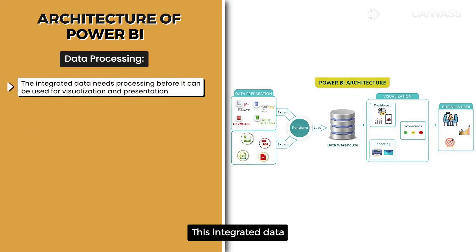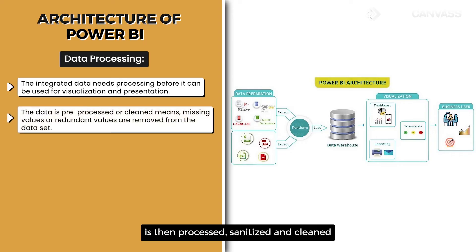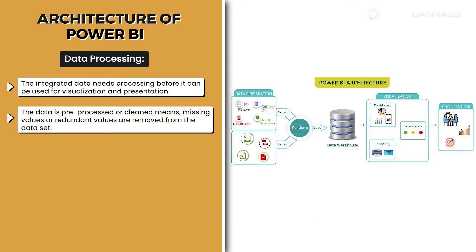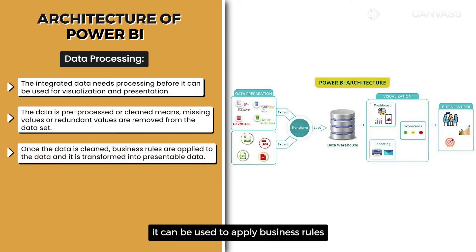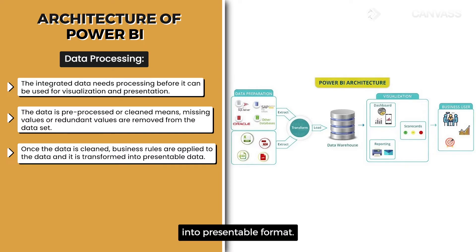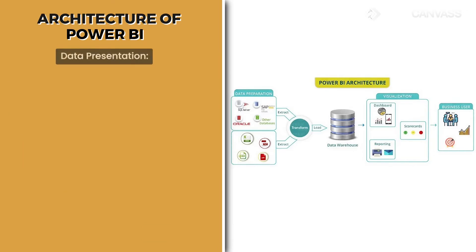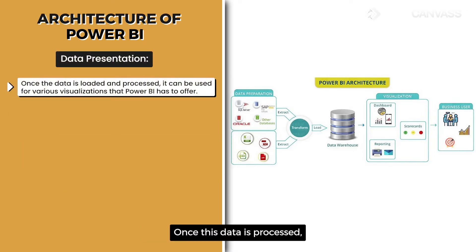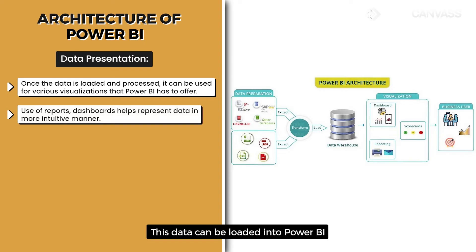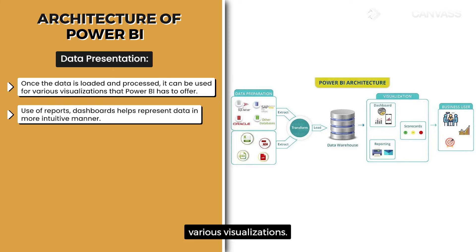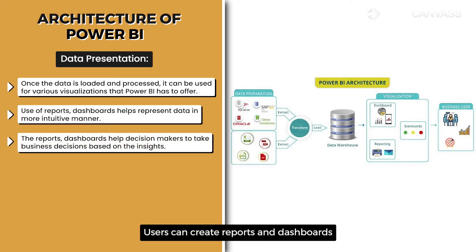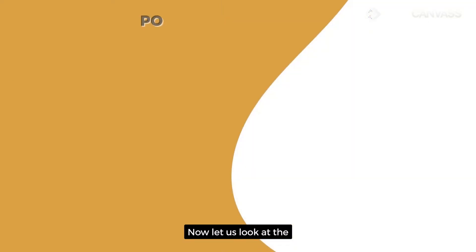This integrated data is then processed, sanitized, and cleaned for analysis purposes. Once the data is cleaned, business rules can be applied and it can be transformed into a presentable format. All this is done at the staging area and is called Data Processing. Once the data is processed, all complex calculations are done at the staging area. This data can then be loaded into Power BI and used to create various visualizations — users can create reports and dashboards to present the data.